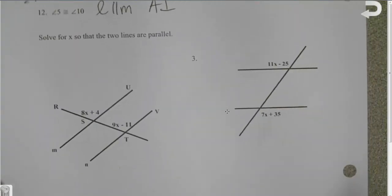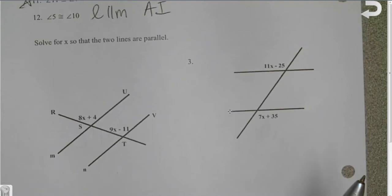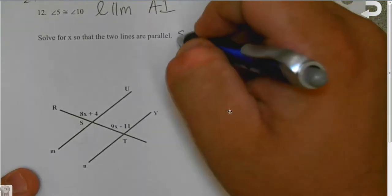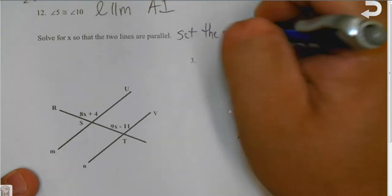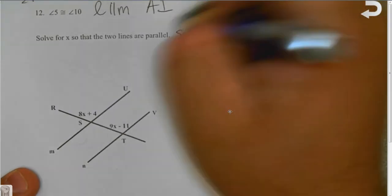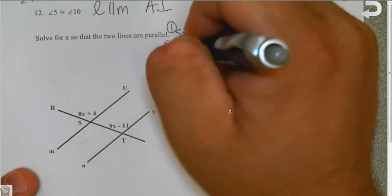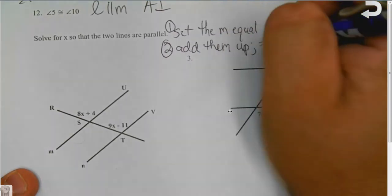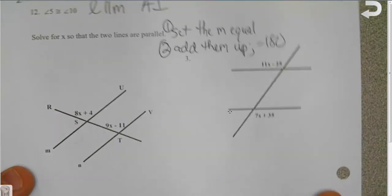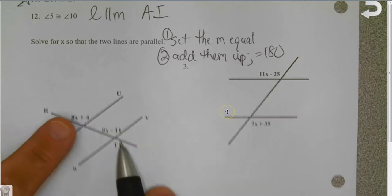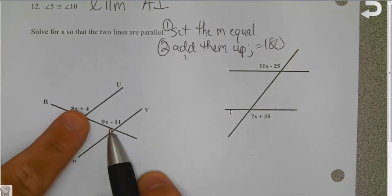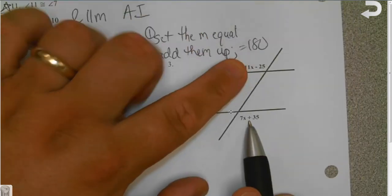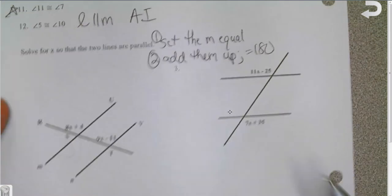Okay. Just like we talked about in the first half, you can prove that lines are parallel by two choices again. Do I set them equal? Or do I add them up? And then set them equal to 180. Well, what do you think is going to happen here? They're equal. Set them equal. What do you think is going to happen here? They're equal. Set them equal. And solve.